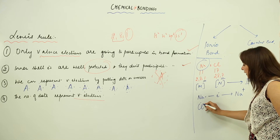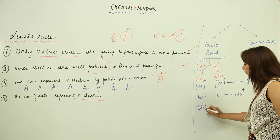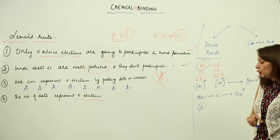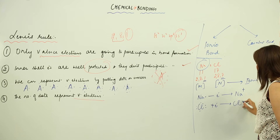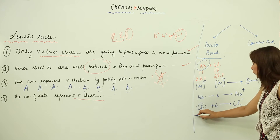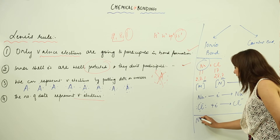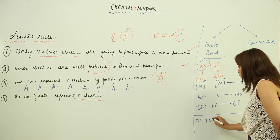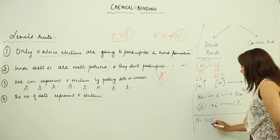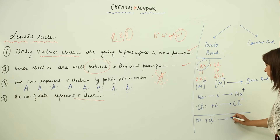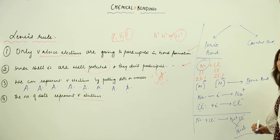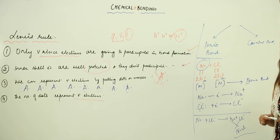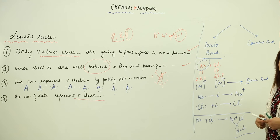Chlorine possesses seven electrons. It needs one electron to complete its octet, so it accepts one and forms the chloride ion. So when sodium with one electron combines with chlorine with seven electrons, it forms the sodium ion and the chloride ion. When we crisscross the charges, we get NaCl. This is the ionic bond.